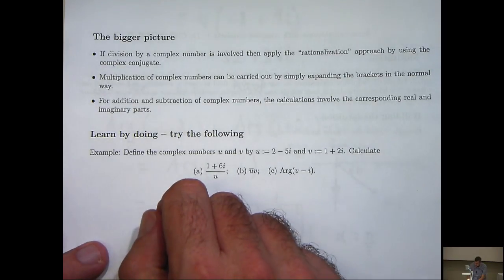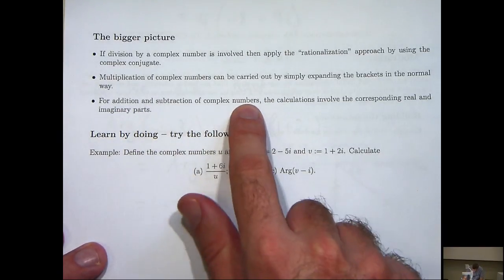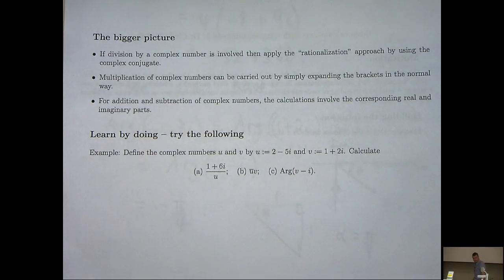And the easiest operations of all are addition and subtraction of complex numbers. You just add or subtract the corresponding real and imaginary parts.